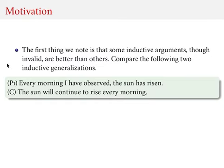The first is as follows. My premise is that every morning so far that I have observed, the sun has risen — every morning of my life, the sun has risen. And I conclude from that that the sun will continue to rise every morning; for instance, tomorrow I expect the sun to rise as well. Note again that this argument is not deductively valid. It's logically possible that tomorrow, when I wake up, the sun burns out or disappears. That is a logical possibility.